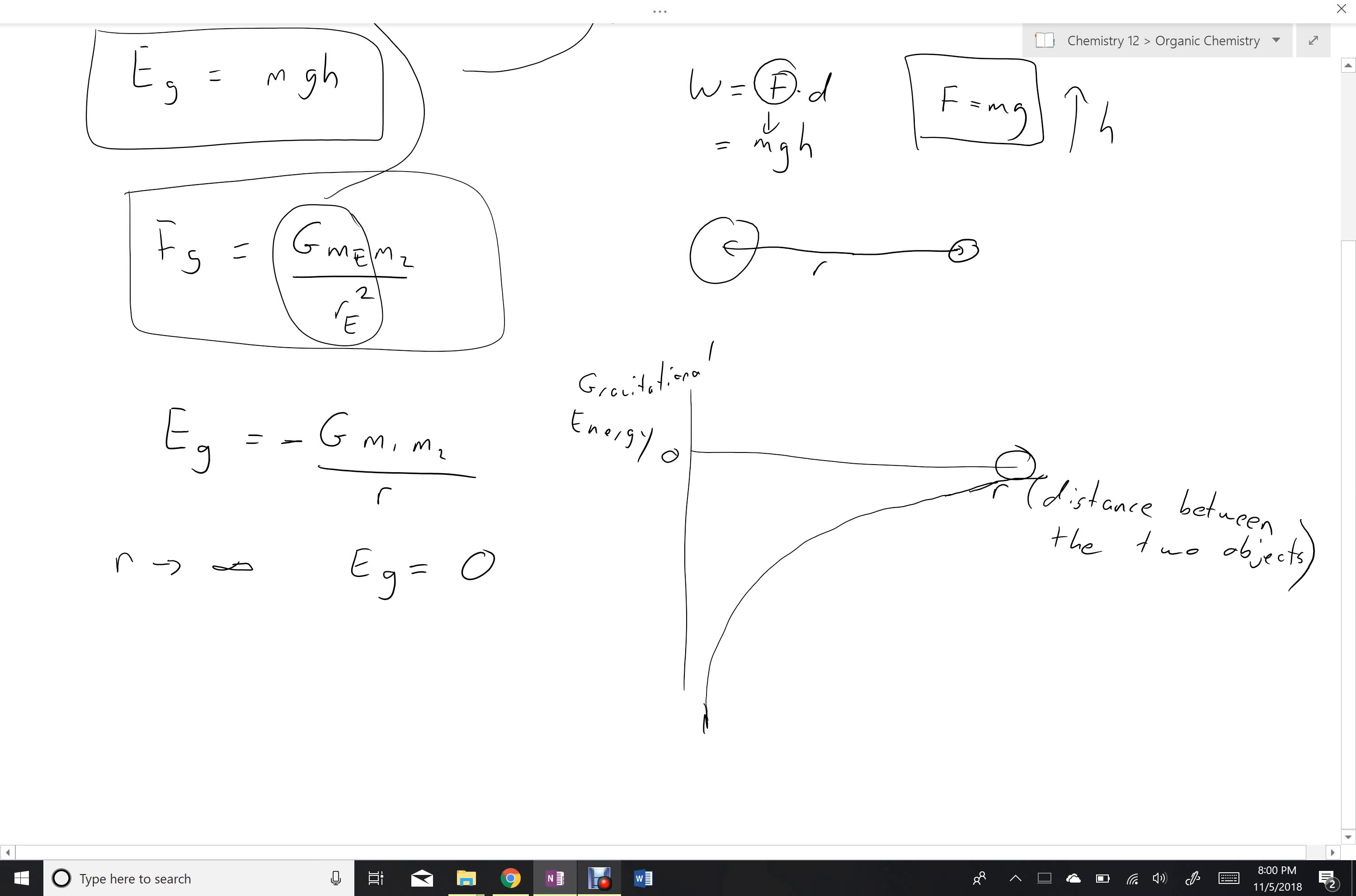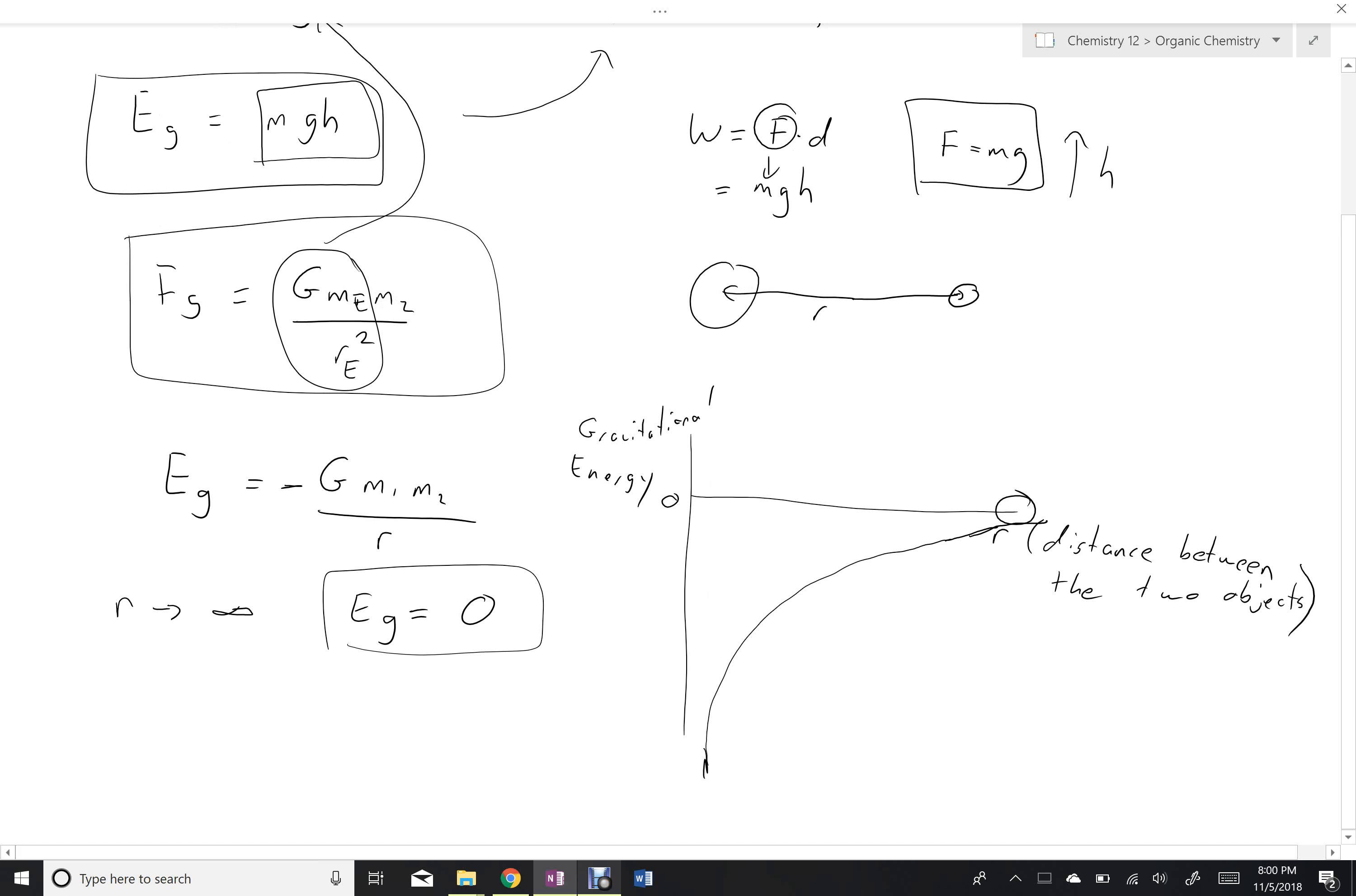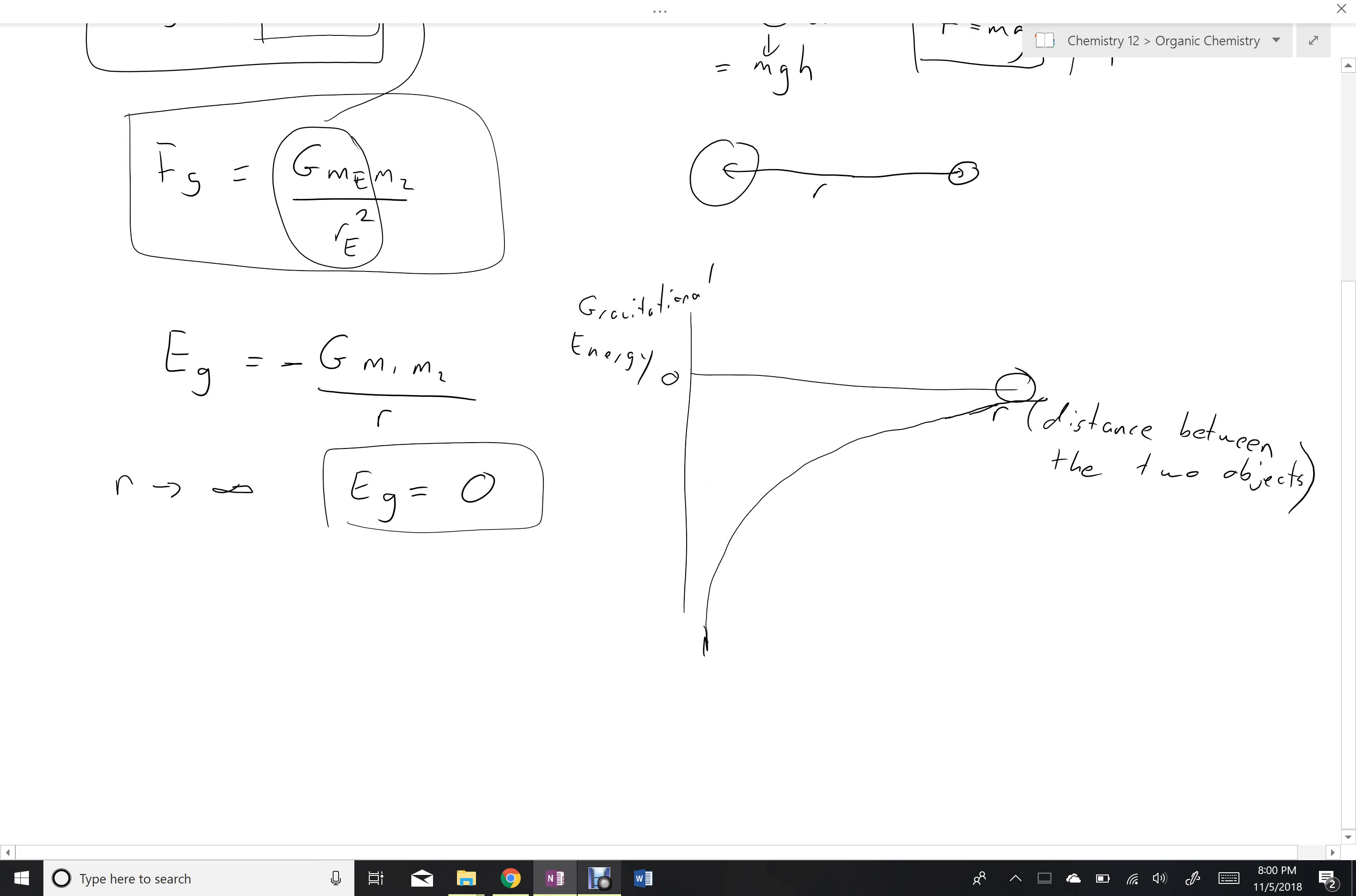So the behavior as we're going to very large R's is zero. So now, instead of when we're using this formula, where we would say height zero is an arbitrary choice that we choose to fit the problem and make it as easy as possible, where zero gravitational energy occurs for a universal gravitational question is not an option. It's always the same location.